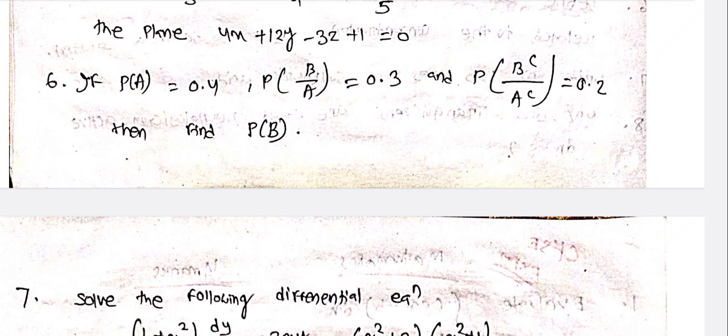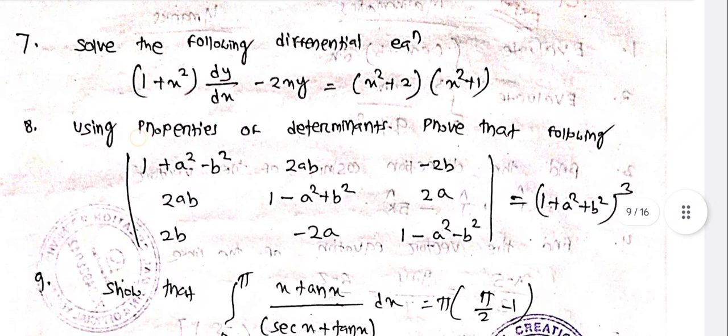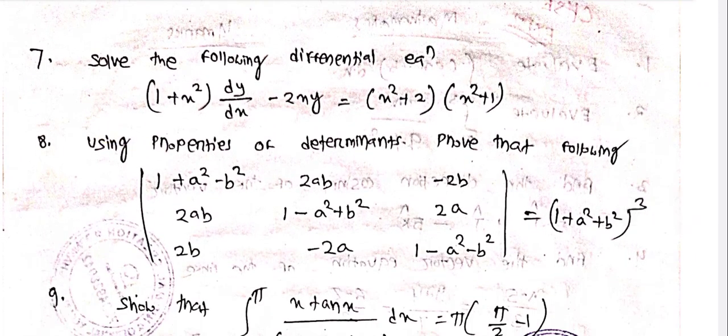P(B|A) = 0.3, and P(B|A') = 0.2, then find P(B). Solve the differential equation: (1 + x²)dy/dx - 2xy = (x² + 2)(x² + 1).